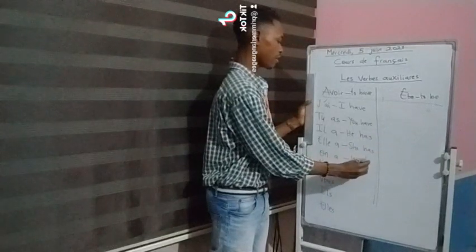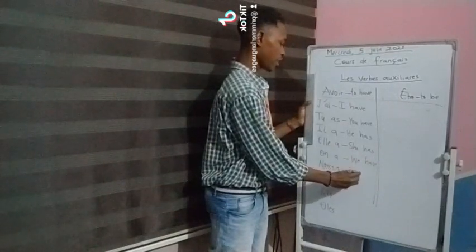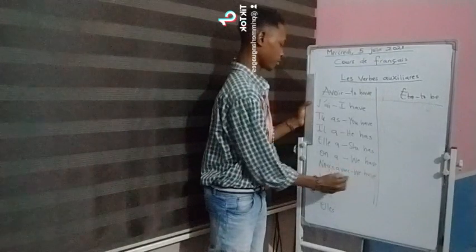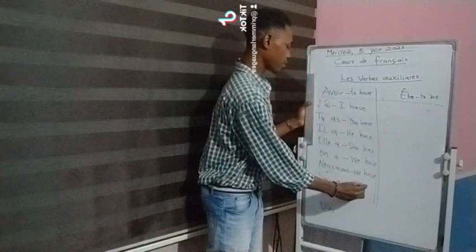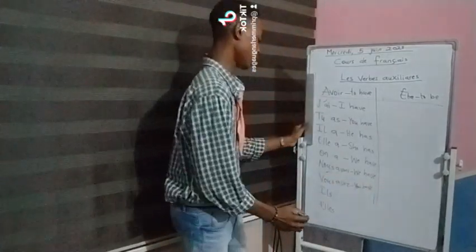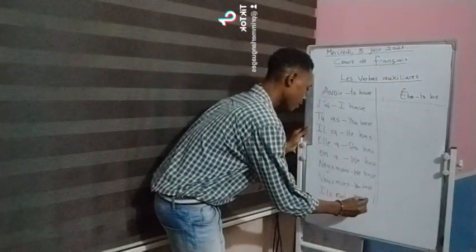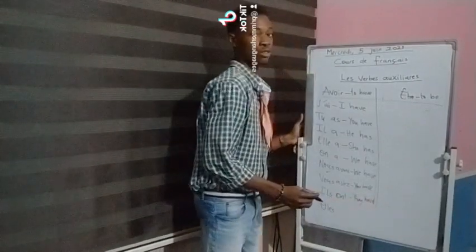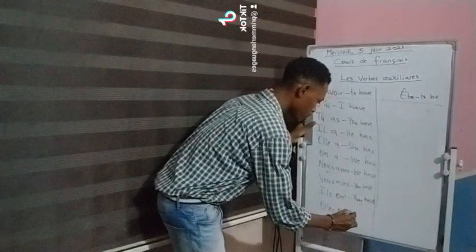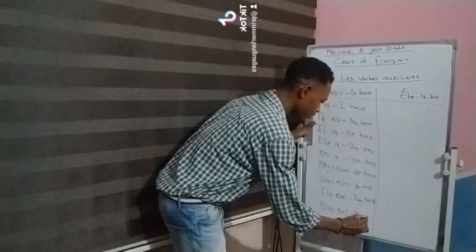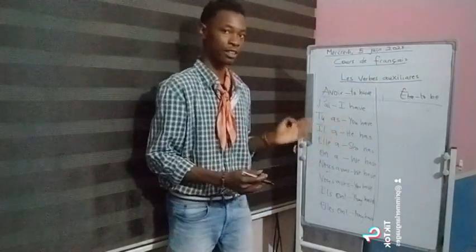On a — we have. Nous avons — we have (formal). Vous avez — you have, formal and more than one person. Ils ont — they have, a group of males or mixed genders. And lastly, elles ont — a group of females, they have. Voilà, there you go — we have the verb 'to have' in the present tense in French.